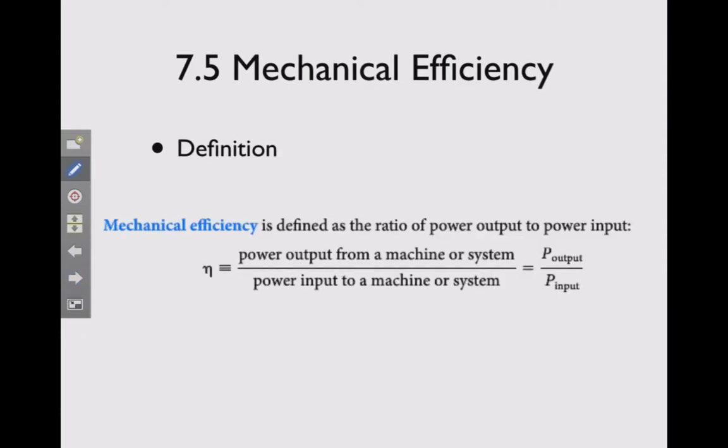Mechanical efficiency is defined as the rate of power output to power input. So if we write this another way, the power output is going to be the efficiency factor times the power input. And we can see that since this is always less than 100%, basically less than 1 or 100%, that the power output will always be less than the power input. So power out is going to be less than power in, which also makes physical sense to us.